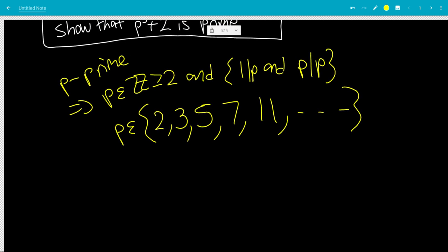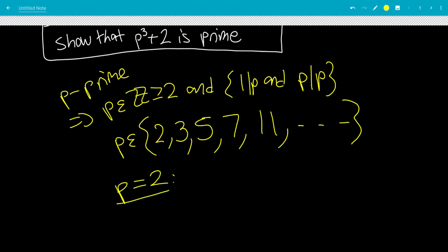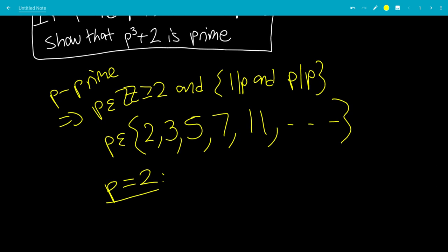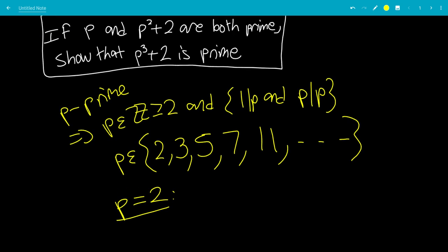So let's look at p equals 2 first. We have if p and p squared plus 2 are both prime. Well, there are only a certain amount of primes that actually have this attribute. So let's show it for those primes, and then we'll show that if p squared plus 2 is not prime from p, then we finish the question.